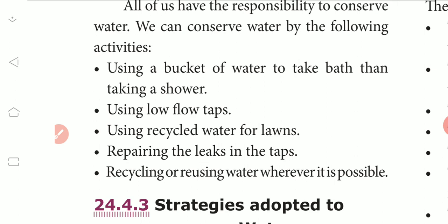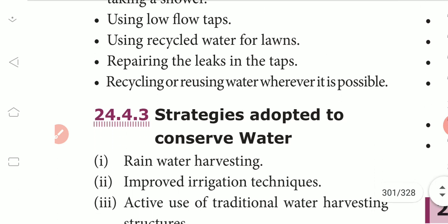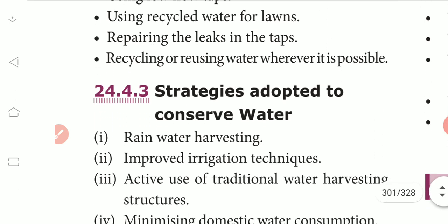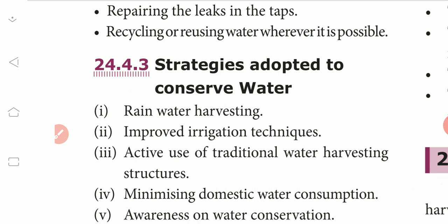Reusing water in any way possible — whether for pools, trees, bathrooms, or factories. Next, strategies adopted to conserve water include rainwater harvesting and reusing water.